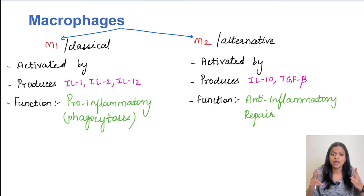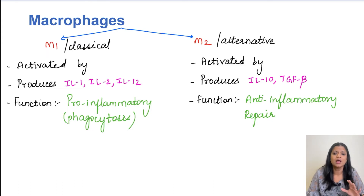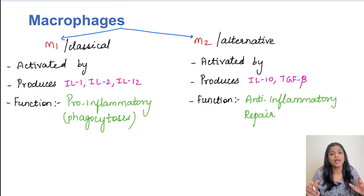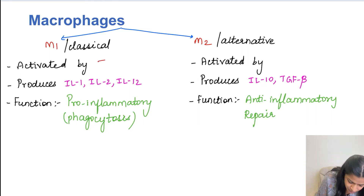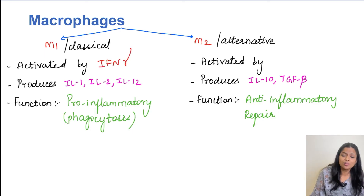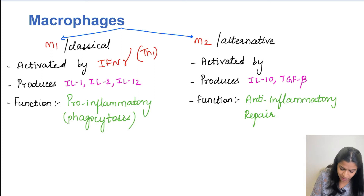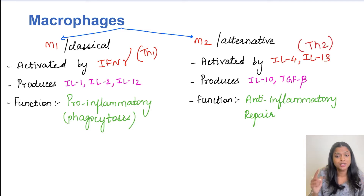There are two types of macrophages: classical M1 type and alternative M2 type. M1 macrophages are pro-inflammatory and their main function is phagocytosis. M2 macrophages are anti-inflammatory and involved in the process of repair. M1 macrophages are triggered by interferon gamma, produced by T helper subset 1. M2 macrophages are activated by interleukin 4 and interleukin 13, produced by T helper subset 2.